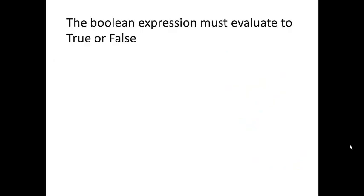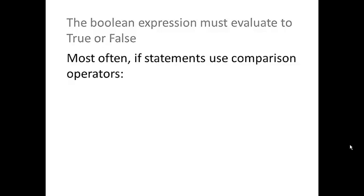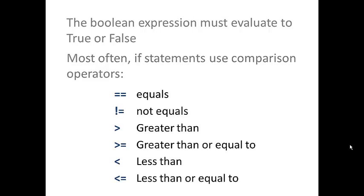The Boolean expression must evaluate to true or false. That's the definition of a Boolean expression. It can only have two values, true or false. Most often statements use comparison operators: equals, not equals, greater than, greater than or equal to, less than, less than or equal to.